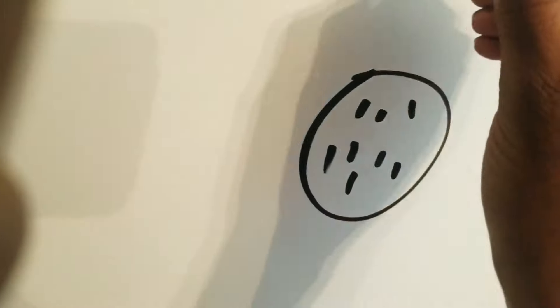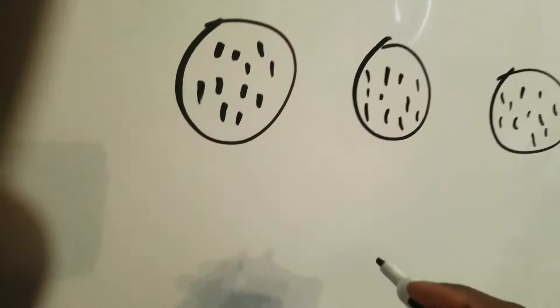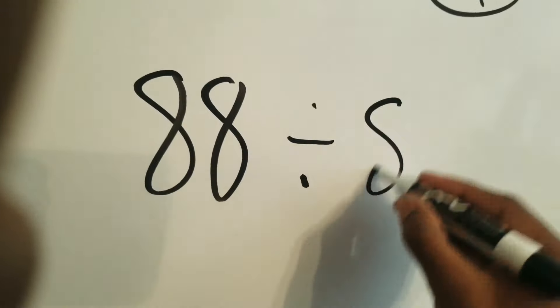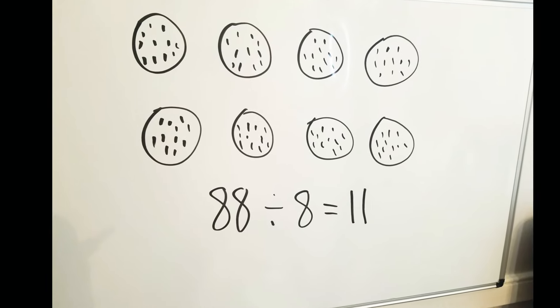In the end, guys, I ended up with 11 in each of my eight circles and I was able to write out my number sentence being 88 divided by 8 equals 11. Here we go, guys. That's the final answer.